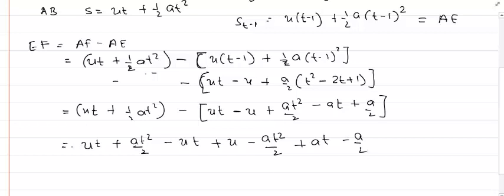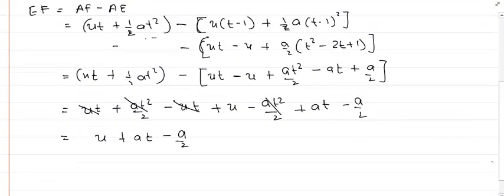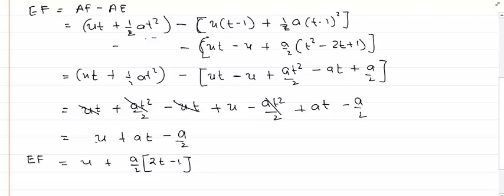The ut terms cancel out and the at squared by 2 terms cancel out, leaving: u plus at minus a by 2. This can be rewritten as u plus a/2 times (2t minus 1). This formula gives the distance covered in the t-th second.